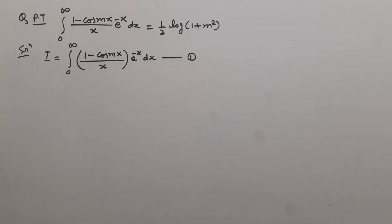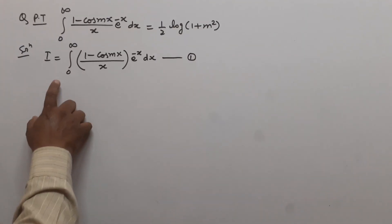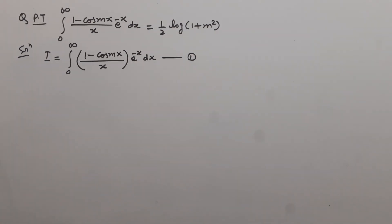Now, here we can see that m is independent from x, so m is the parameter. Therefore, we first differentiate equation 1 with respect to the parameter m.